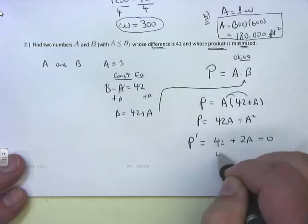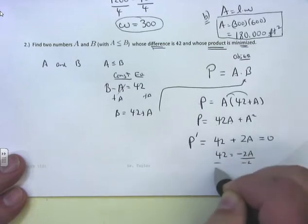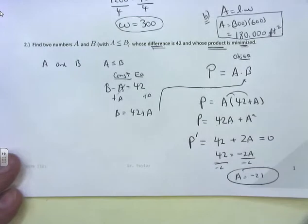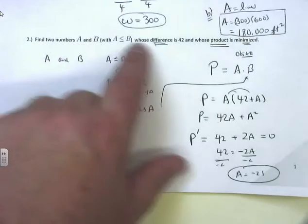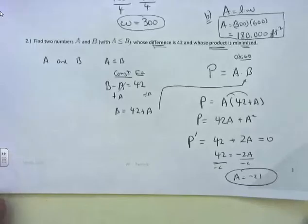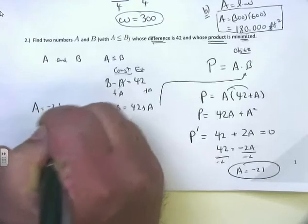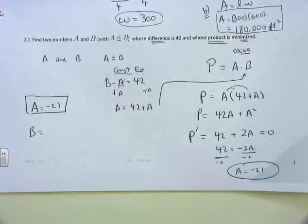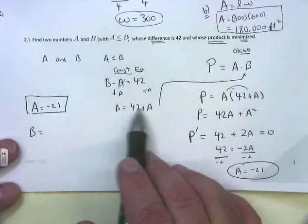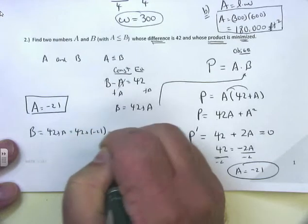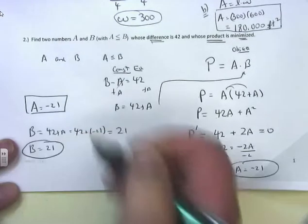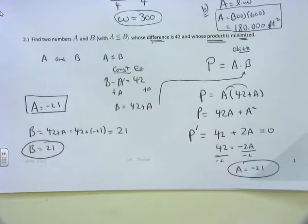That gives 42 equals negative 2A, so dividing by negative 2: A equals negative 21. Don't forget step number six — go back and read the question. I'm supposed to find two numbers A and B whose difference is 42 but whose product is minimized. I got A equals negative 21. To get B, go back to the constraint: B equals 42 plus A, which is 42 plus negative 21, equals positive 21. So B equals 21. There are my two numbers: A is negative 21, B is positive 21.